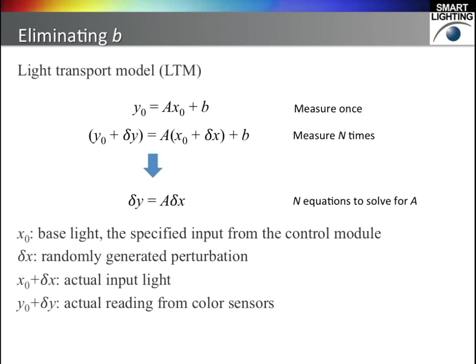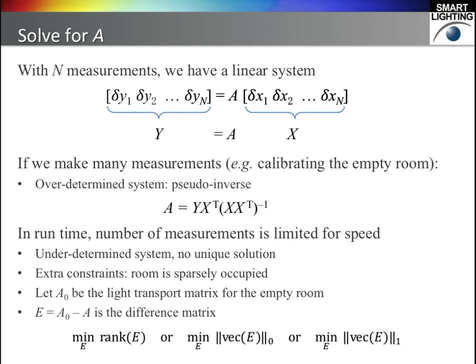In the equation, there is an annoying B, which is the sensor response to the ambient light. We can eliminate B by adding a perturbation to the input and taking the difference. Here X0 is called the base light, delta X is the perturbation, and delta Y is the change in the sensor readings. If we apply N different perturbations, we get a linear system Y equals AX. If we can make many measurements — for example, when we do a calibration for the empty room — the linear system is overdetermined, and we can solve it with a pseudo-inverse.